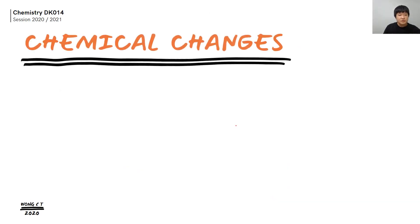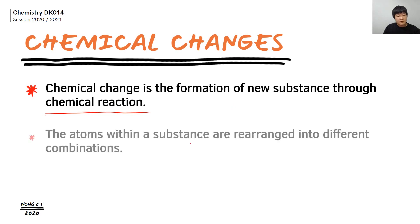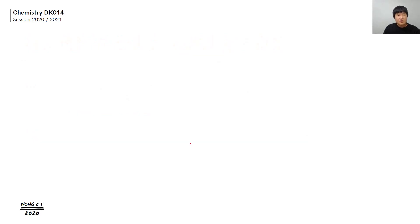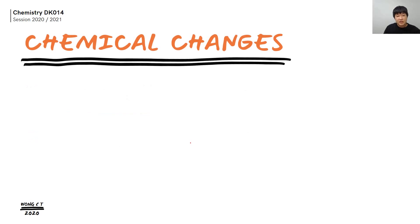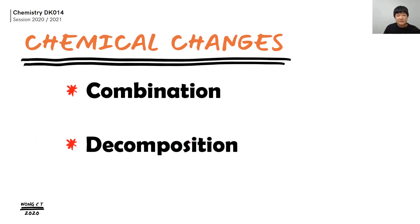Now let's move to chemical changes. Unlike physical changes which only affect the physical state, chemical changes involve a chemical reaction — it is the formation of a new substance. The atoms within a substance are rearranged into different combinations, forming different products. We have two types of chemical changes: first, combination; second, decomposition.